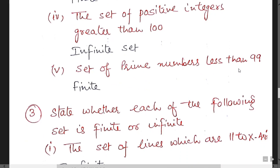Set of prime numbers less than 99, you can easily count. Because it is less than 99. If this value is greater than 99 you can't count that number. It means the set will become infinite.